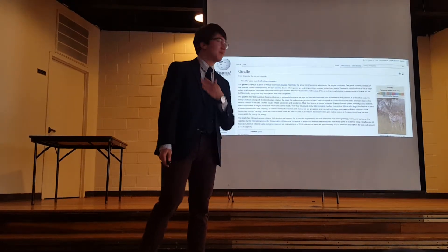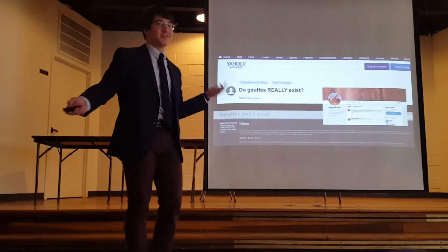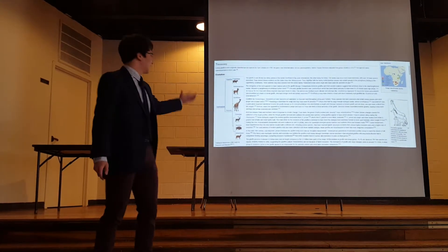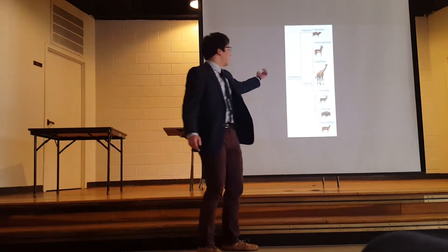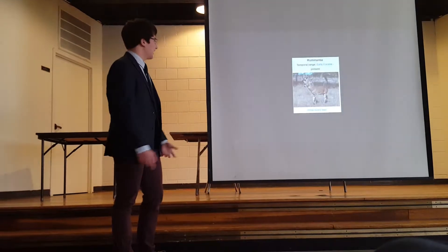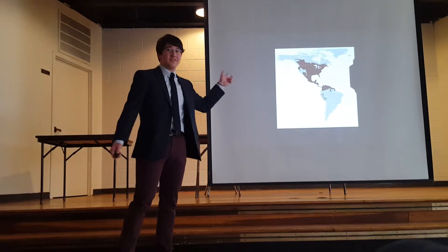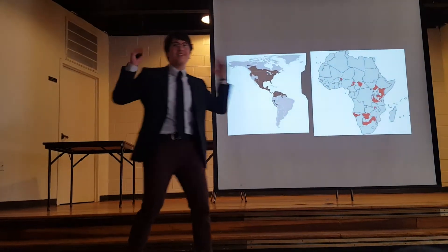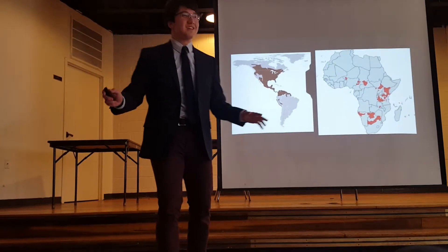I know how to use trustworthy sources from AP Lang and Comp, but the only source I could use for this assembly was Wikipedia. On the Wikipedia page, if you go to the evolution section, it says the giraffe originates from the Ruminantia. I don't know what that is, so I looked it up and got a picture of white-tailed deer. The white-tailed deer lived in the Americas. The giraffe lived in Africa — how can this be possible? It's only possible if the giraffe didn't exist.